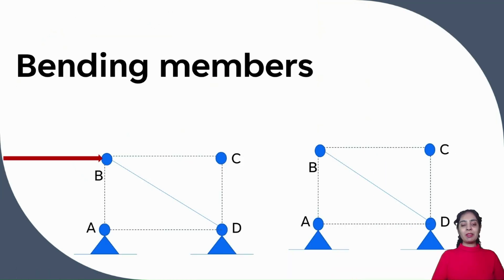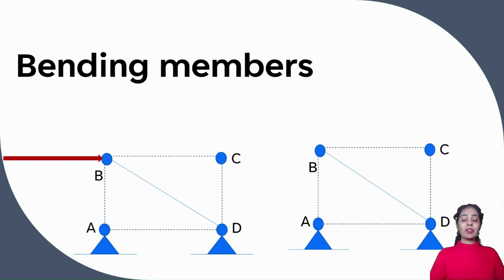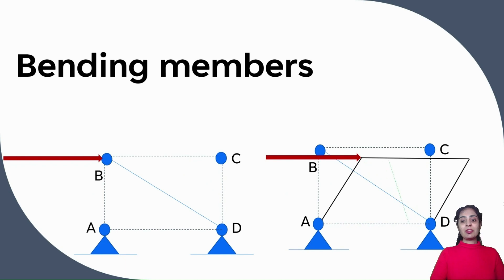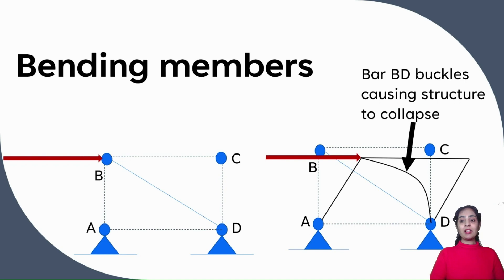Bending members: this is structure A, B, C, D loaded with a force at joint B. Joint B undergoes translation, but member B-D buckles, causing the structure to collapse.